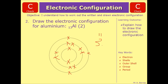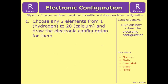Hopefully that makes sense for you. If you're feeling confident, have a look at the review question, which is choose any two elements from 1 to 20, 1 being hydrogen, 20 being calcium, and draw the electronic configuration for them. And if you want to push your knowledge even further, do the written electronic configuration as well.